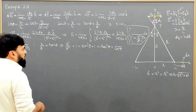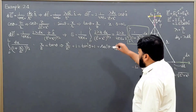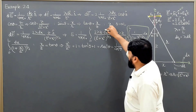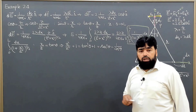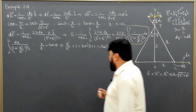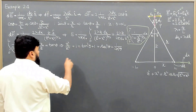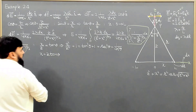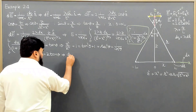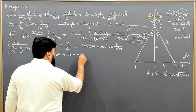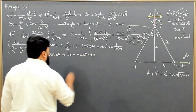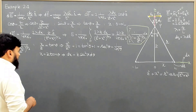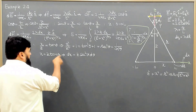Coming back, two things remain: first is the calculation of our variable when we convert to another variable, and the next calculation is of dx. From here, x = z·tan θ, and if I find dx, then dx will be equal to z·sec²θ·dθ. This is the derivative because z is constant, giving us z·sec²θ·dθ.